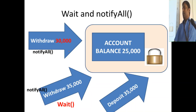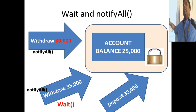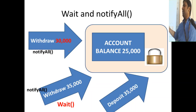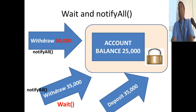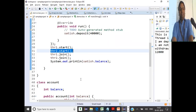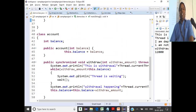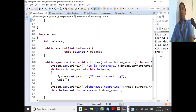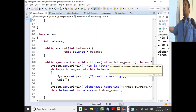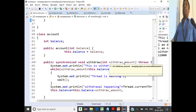That is notifyAll — very simple. You must understand that though notifyAll wakes up many threads, only one thread will acquire the lock and execute. Other threads must wait because when a lock is held on an object, other threads cannot enter the synchronized section. Now let's write the code.